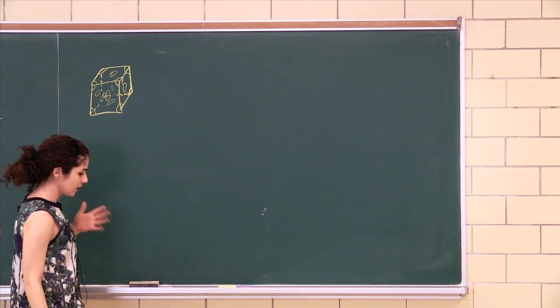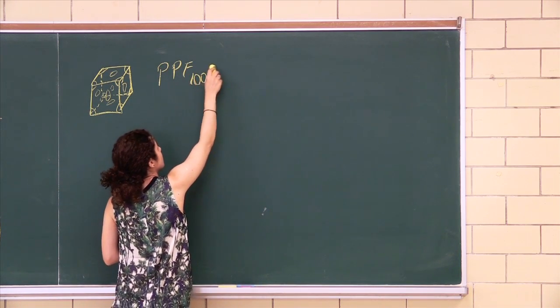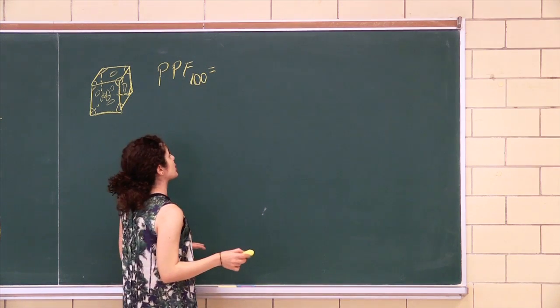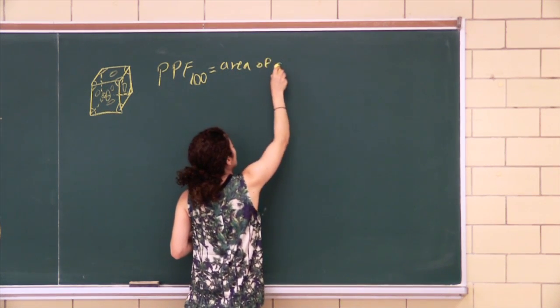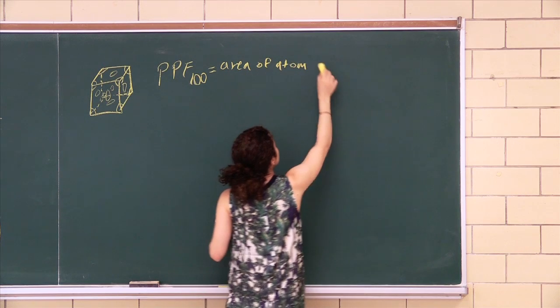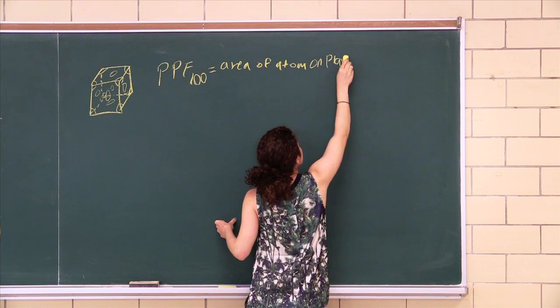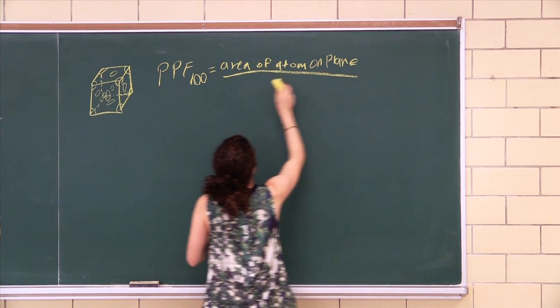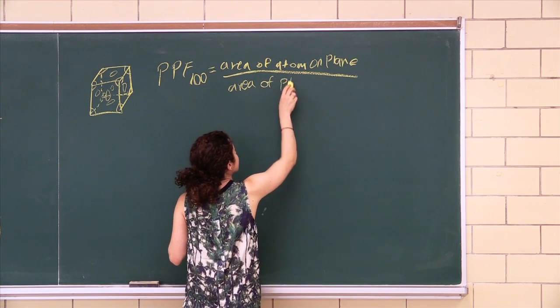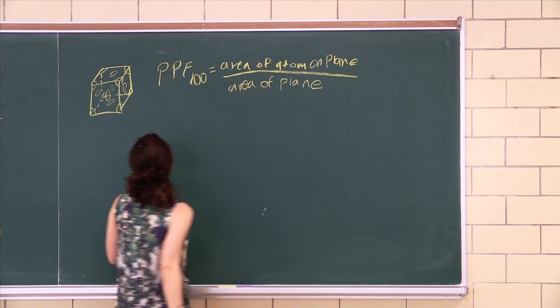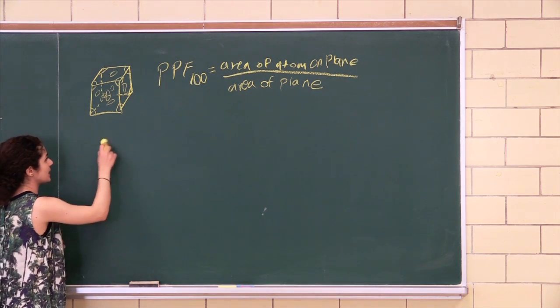Alright, so the planar packing factor for the 1 0 0 plane - always write out the formula first. So this is the area of atoms on the plane all over the area of the plane. The 1 0 0 face on the FCC looks something like this.